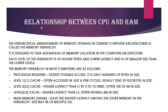Next, we will learn about the relationship between CPU and RAM. The processing done by a CPU depends on the memory hierarchy. The hierarchical arrangement of memory storage in computer architecture is called the memory hierarchy. It is designed to take advantage of memory location, where each level is of higher speed, lower latency, and smaller size than the levels below. Latency means the time interval between fetching of an instruction and processing. The first level is the processor register, which is built within the CPU and used to hold values temporarily when executing an instruction. These memories have the fastest possible access and are only hundreds of bytes in size.